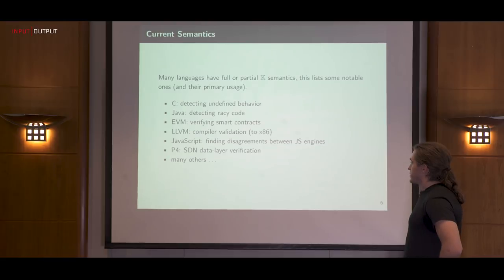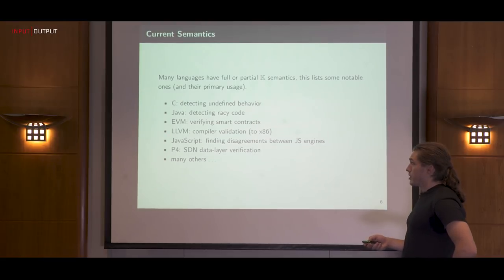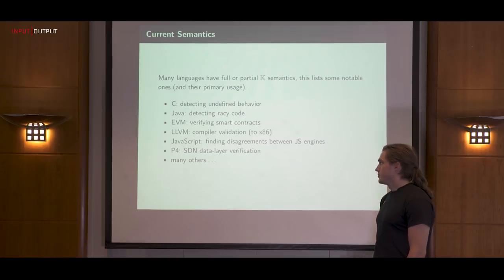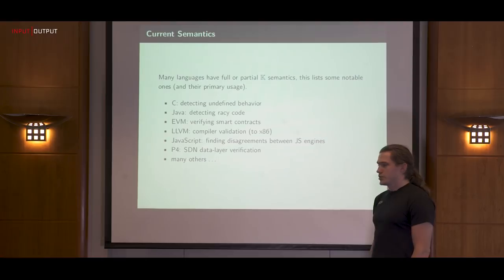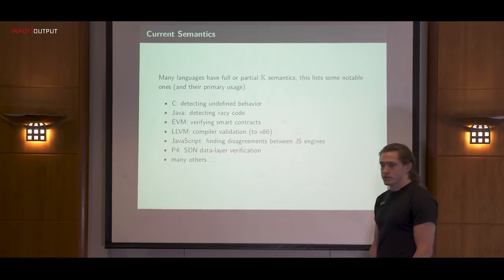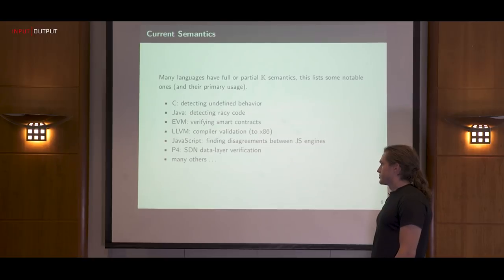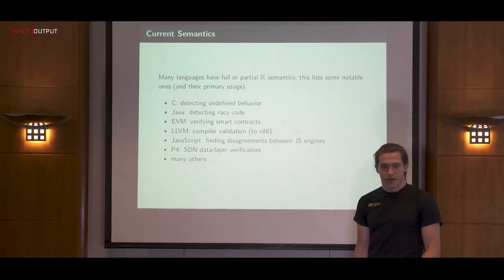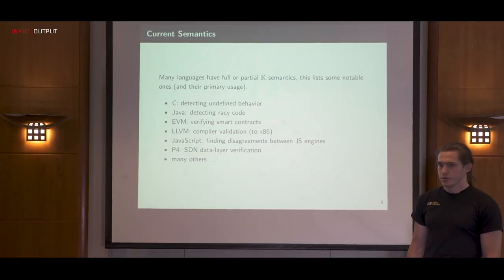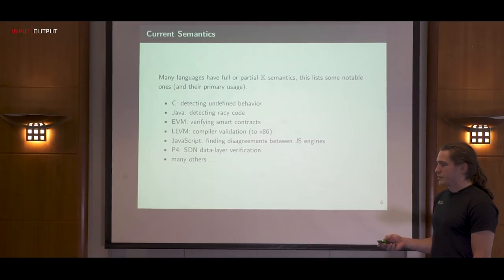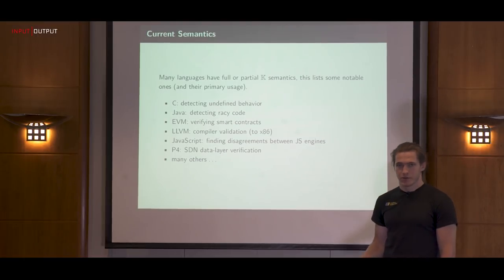Here's some examples of languages we have semantics for and their primary usage. We have C for detecting undefined behavior, Java for detecting race conditions, EVM for verifying smart contracts, LLVM for compiler validation, JavaScript for finding disagreements between engines, and P4 for software defined network data layer verification. There's many others as well.